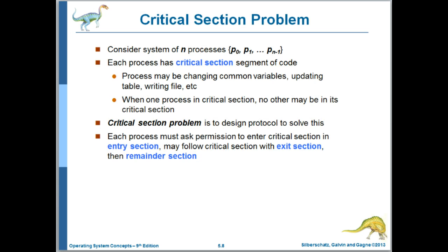So this leads to the definition of the critical section problem. So we have some number of processes trying to access and modify shared data. The sections in each process's code in which the process is accessing this shared data is referred to as a critical section. And the critical section problem is ensuring that no more than one process is executing in its critical section at any one point in time.